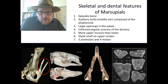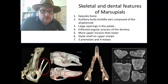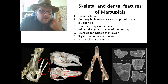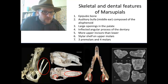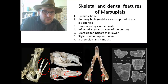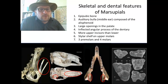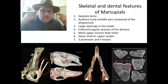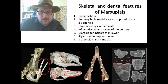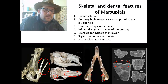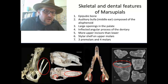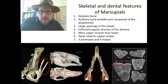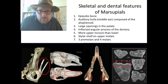We can also look at the auditory bulla — the middle ear — whether it is composed of the allosphenoid or not. We can look to see if there are large openings in the palate, an inflected angular process of the dentary in the lower jaw, and whether there are more upper incisors than lower, which is a characteristic of marsupials. Another marsupial characteristic is that their upper molars have these stylar shelf structures on the outside. And then we can look at the dental formula — marsupials have three premolars and four molars.